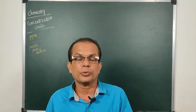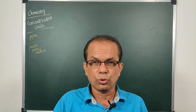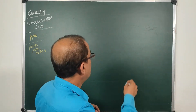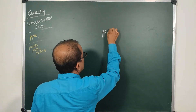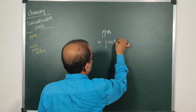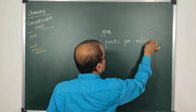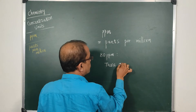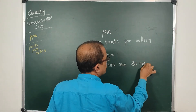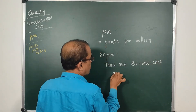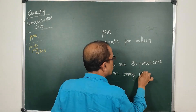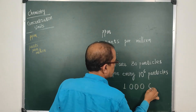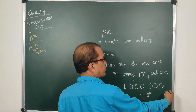In mathematics, 1 million means 10 lakhs. So out of 10 lakh molecules present in air, if there are 80 molecules of a certain air pollutant, then it is said to have 80 ppm. So PPM is parts per million. 80 ppm means there are 80 particles for every million particles, i.e., 10 to the power 6 particles.